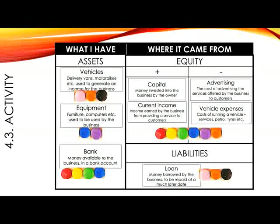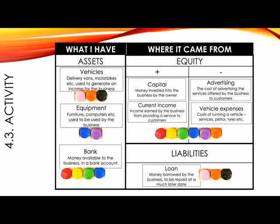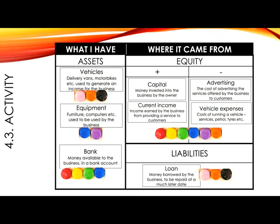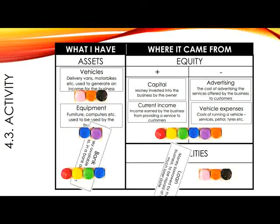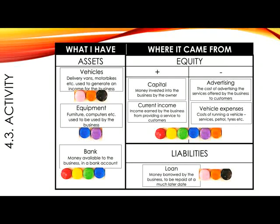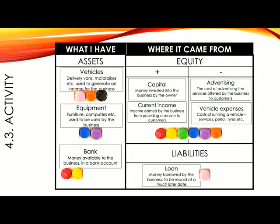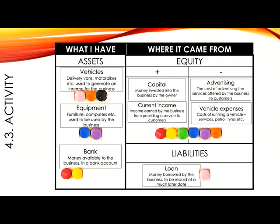Lastly, number seven: paid two Smarties in part repayment of the loan. In this case, both bank and loan are affected, and two Smarties will be removed from both. Although you have less money in your bank account, you also now have less liabilities. And if you check your equation, you have seven Smarties on each side. Well done.